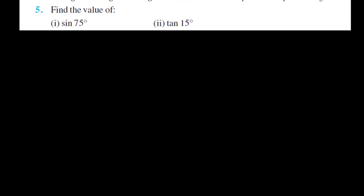Now let us see the fifth question. We have to find the value of sin 75. You can try yourself. In the last lectures you have already seen many formulas. What we have to do here is express 75 as a sum or difference of two angles whose trigonometric ratios we know. We can split 75 as 45 plus 30.